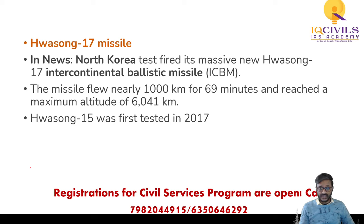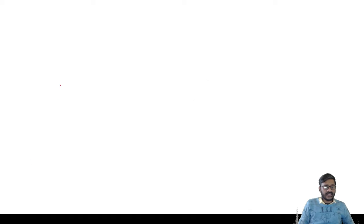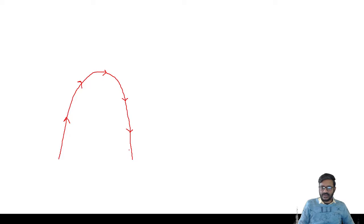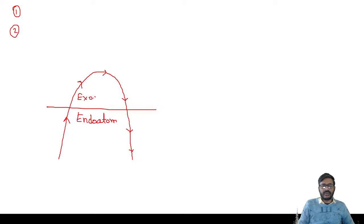First, you need to understand what a ballistic missile is. A ballistic missile is a missile that follows a projectile path - the science of ballistics. Ballistic missiles have two phases: endo-atmospheric, meaning they travel within the atmosphere, and exo-atmospheric, meaning they travel beyond Earth's atmosphere. Ballistic missiles have more range compared to cruise missiles. They carry more payload, but they are less precise, which is why we use them to destroy large targets like cities. Ballistic missiles are easy to detect on radar because they travel from very high altitudes - 2,000 to 5,000 km - and re-enter toward Earth.